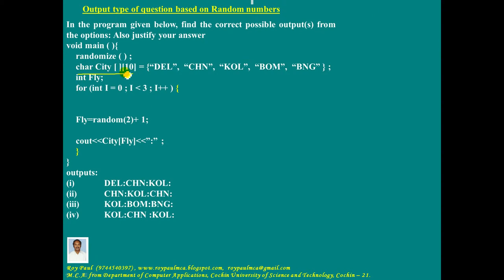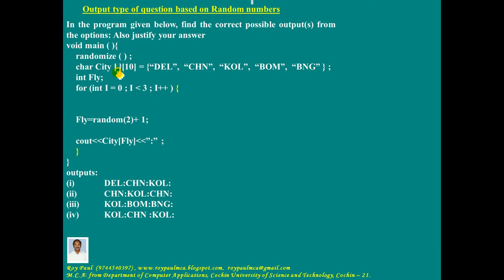Next line: two square brackets means it is a two-dimensional array. The first one contains the number of rows and the second one contains the number of columns. Here the number of rows is not given, but ten columns are there. To find the number of rows, check how many initial values are there. Five initial values are there — one, two, three, four, five. So this is actually five rows and ten columns. In this problem, the number of columns is not important; five rows are important.